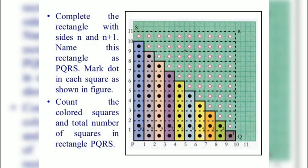Complete the rectangle with sides n and n plus 1. Now name this rectangle as PQRS. Mark dot in each square as shown in figure. Count the colored squares and total number of squares in rectangle PQRS.